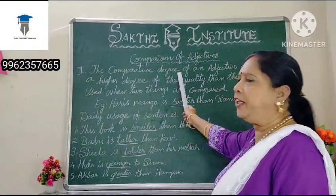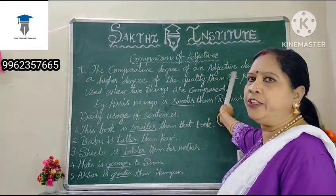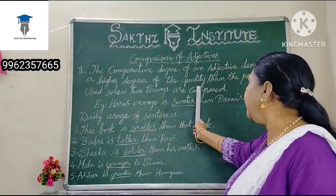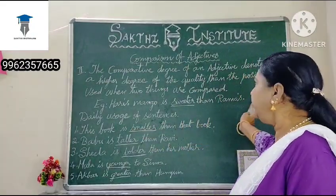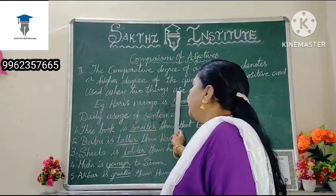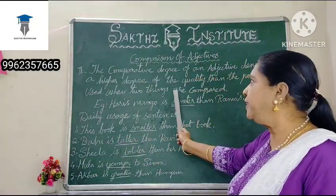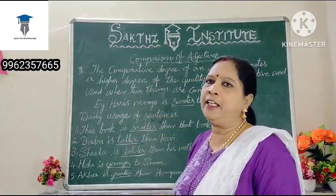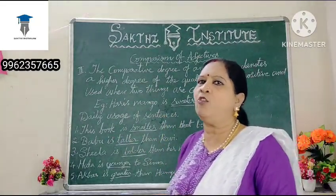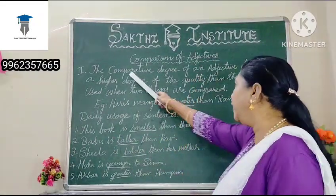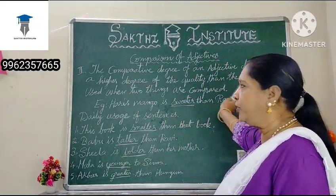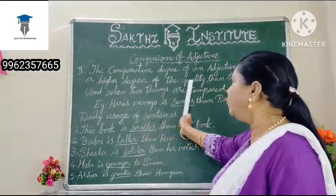The comparative degree of an adjective denotes a higher degree of the quality than the positive, and is used when two things are compared. The comparative degree of an adjective denotes a higher degree of the quality.